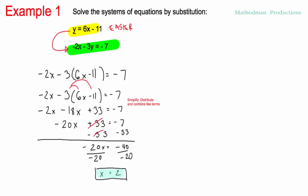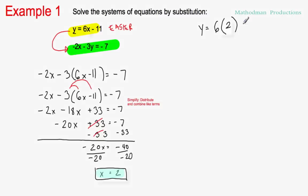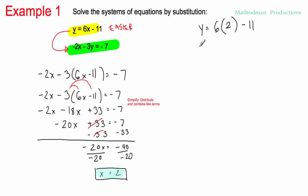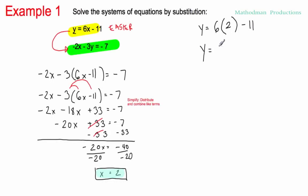x equals 2, and that's going to help us solve for y. How? Substitute this answer into the easier equation — it doesn't matter which one you pick, but it's usually easier to substitute into the easier equation. So y equals 6 times x; instead of x, we substitute in 2, minus 11. Simplify from here: you get 12 minus 11, which is y equals 1.